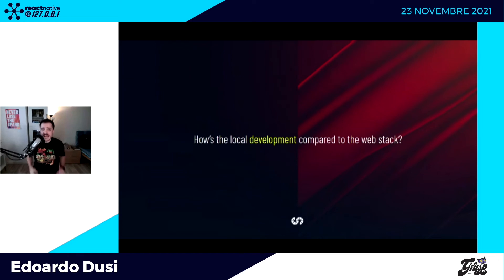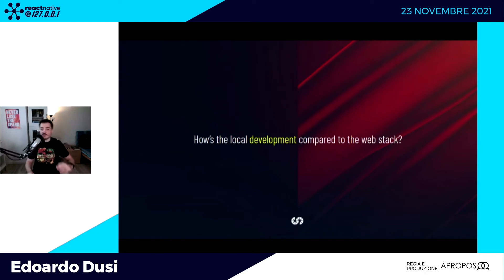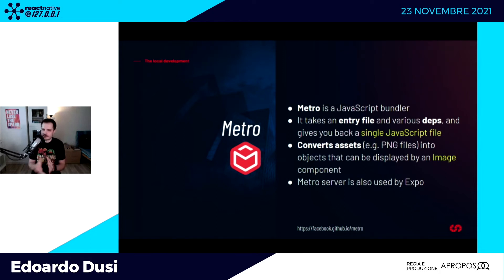Arriviamo alla parte finale e cicciosa del talk: parliamo di local development. Venendo da web, sono abituato a tool CLI, debugger, inspector, continuous integration — tool che mi permettono di pushare, avere pipeline che compilano, testano e deployano il codice in produzione. Lo scenario dello sviluppo mobile è leggermente diverso: ci sono una serie di tool nuovi che su web non avevamo, quindi bisogna capire che cosa sono e studiarli.